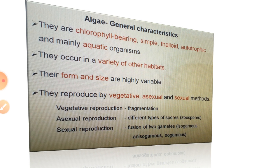They are chlorophyll bearing, simple, thaloid, autotrophic and mainly aquatic organisms. They occur in a variety of other habitats such as moist soil and wood. Some of them have association with fungi and animals, as we have seen already. Their form and size are highly variable.